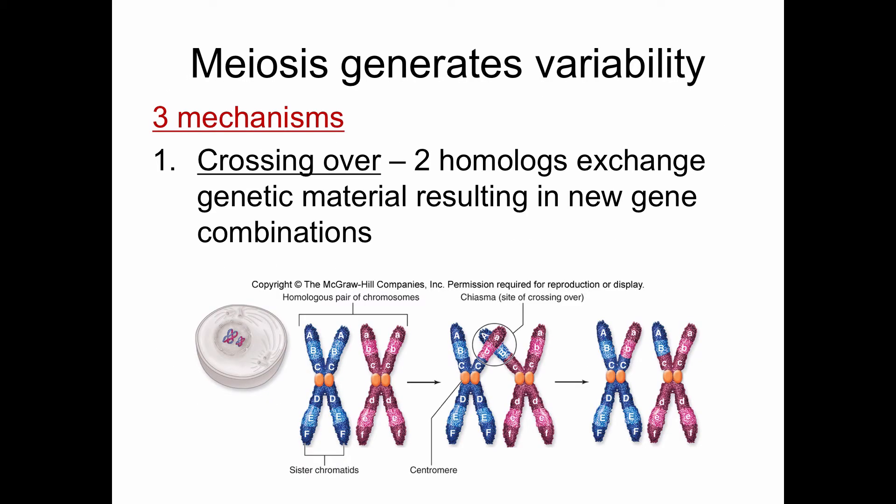Now let's circle back around and talk about crossing over, and a couple of other things that increase variability. One of the big advantages of meiosis is that it's like a big gene scramble — what we're trying to gain is as much variability as possible. If you look at a big family, everyone is different, and a lot of that has to do with what's going on in meiosis. Crossing over really ups the ante in terms of increasing variability.